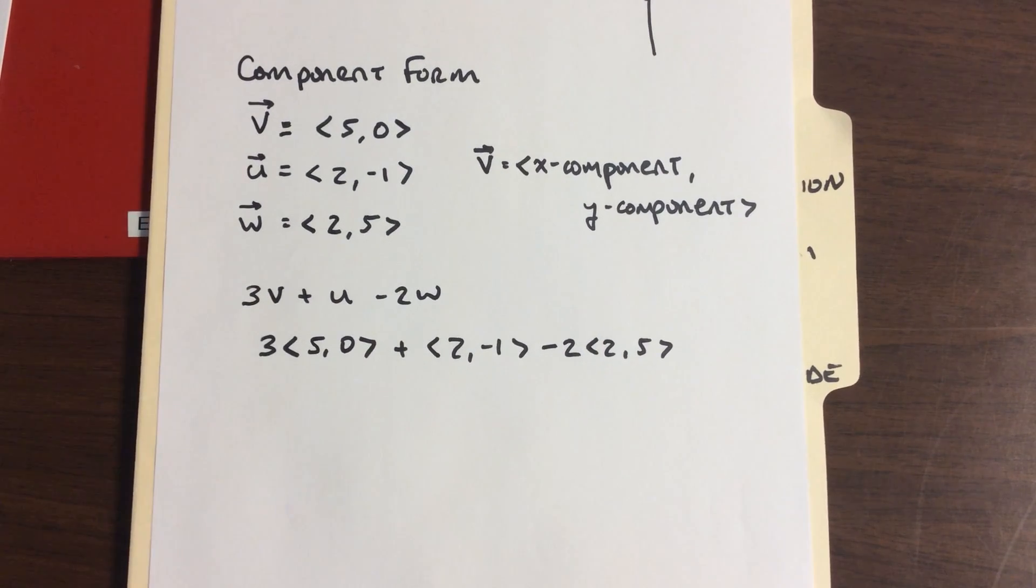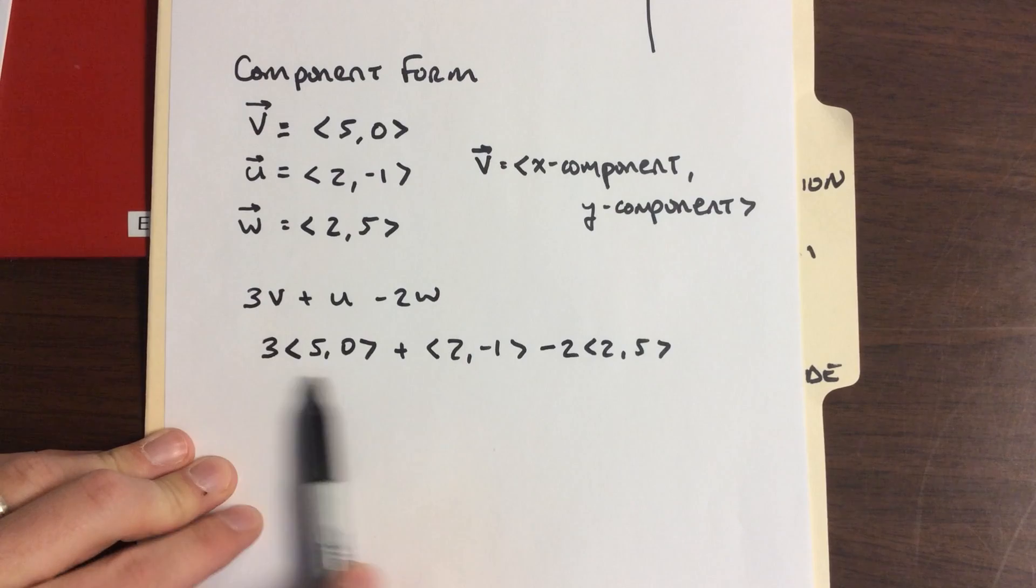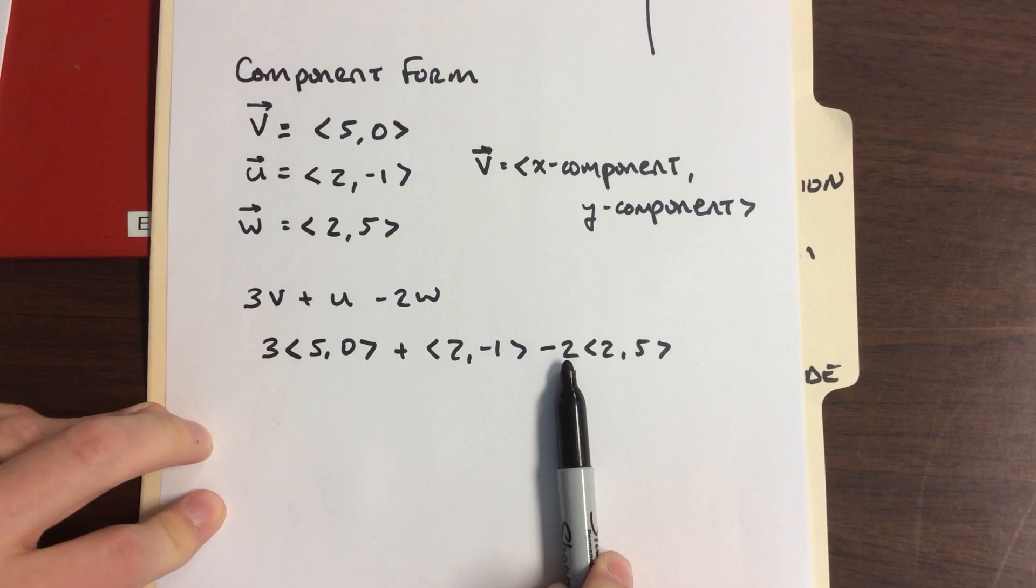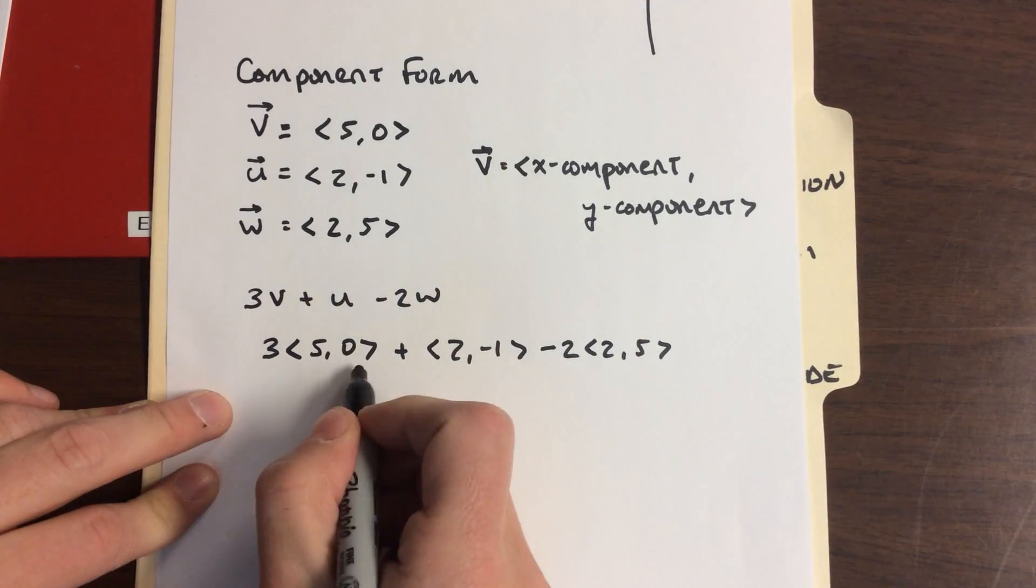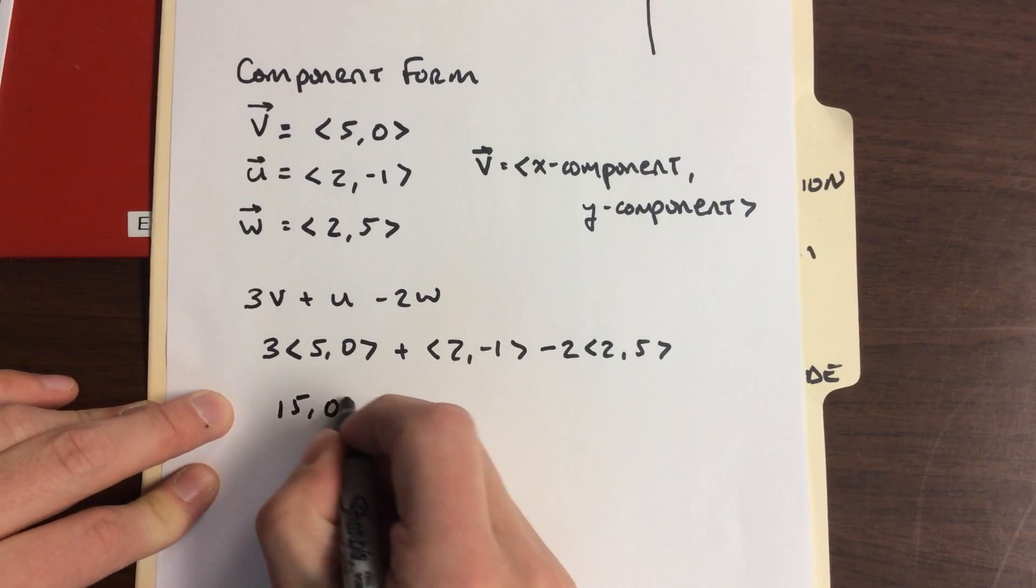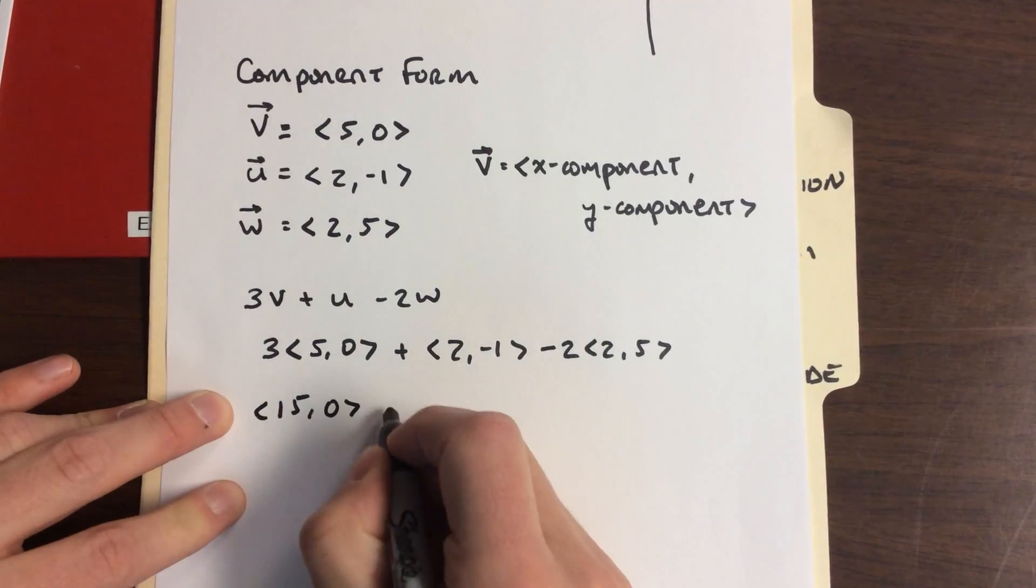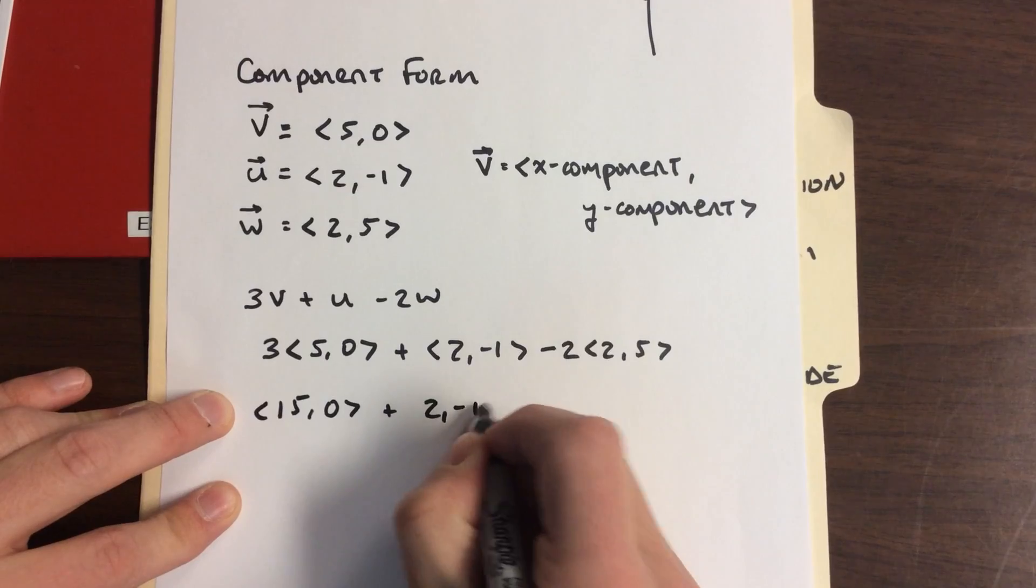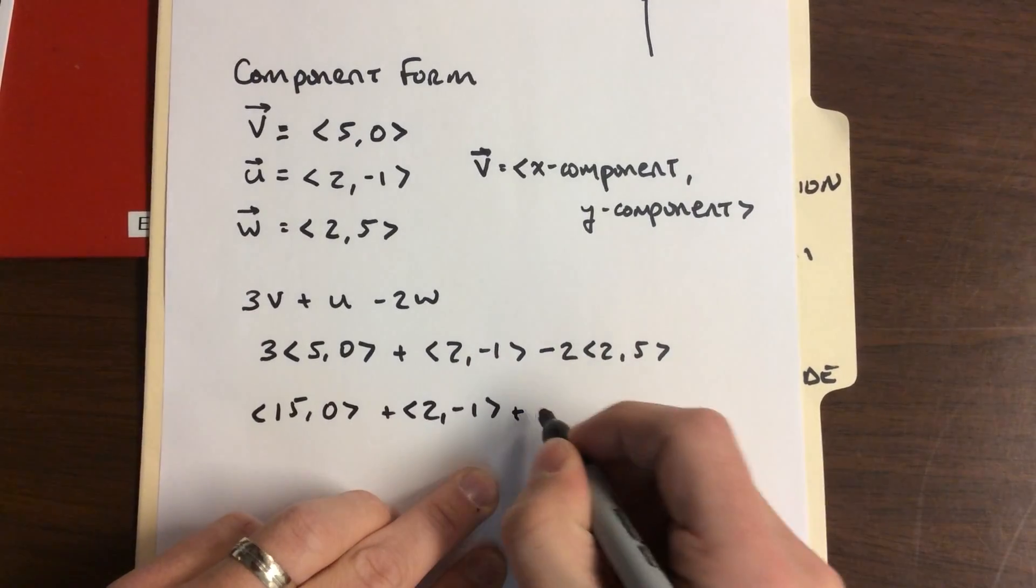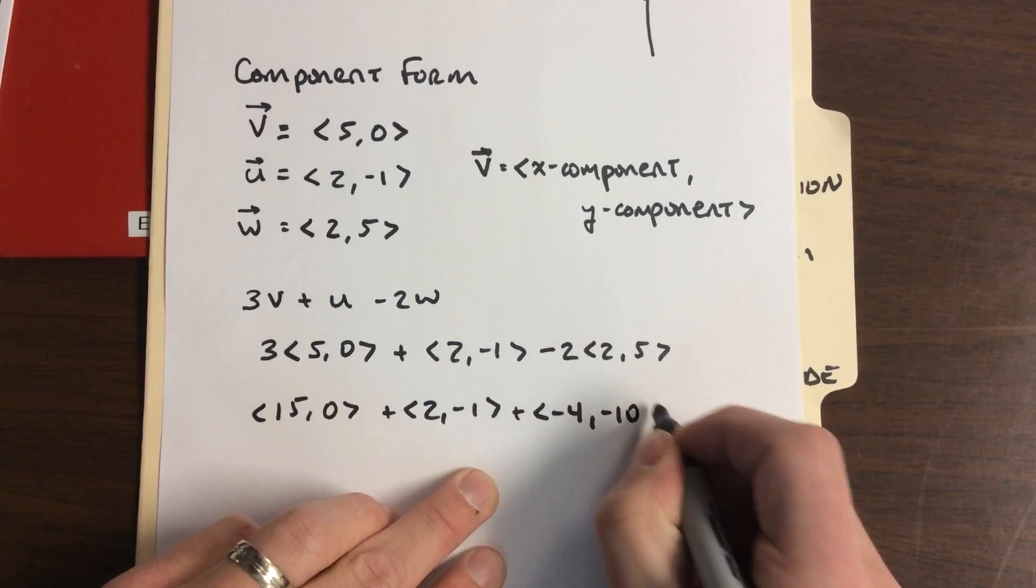Here's where addition, subtraction, vector arithmetic is made much easier when we have things in components. Scalar multiplication, multiplying just by a dilation factor, we distribute that. The factor 3v as we talked would be <15, 0>. We'd have plus u as <2, -1>, minus 2w, this is plus <-4, -10>.